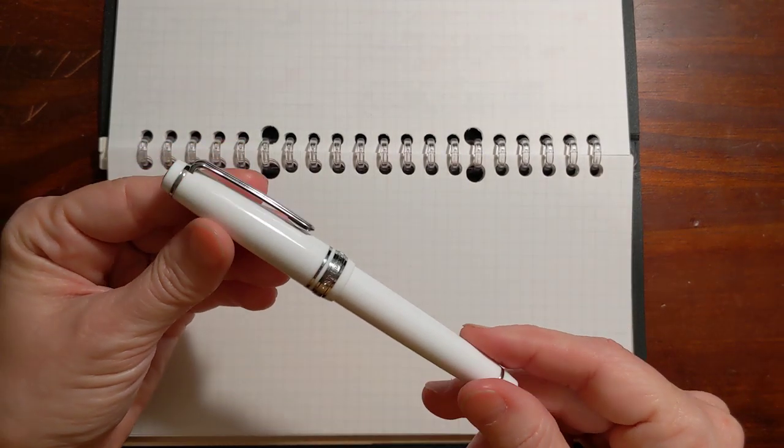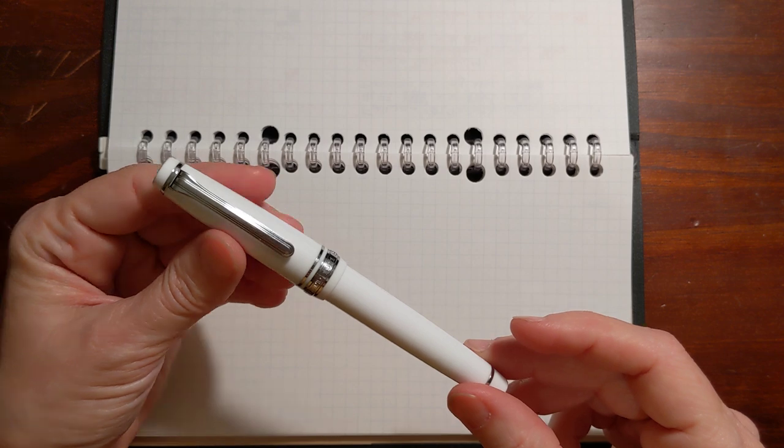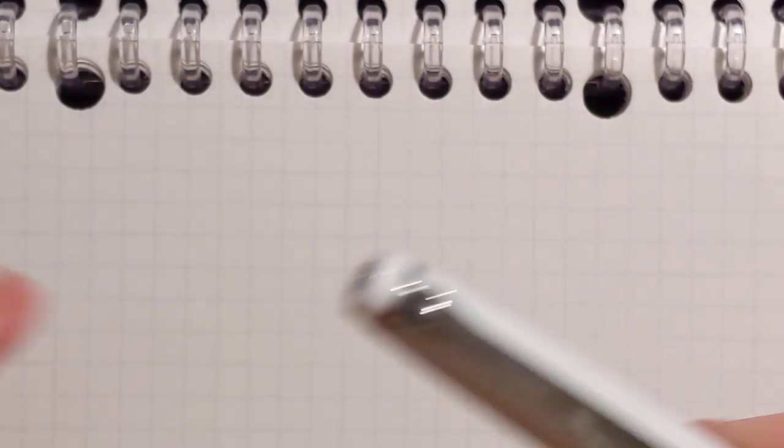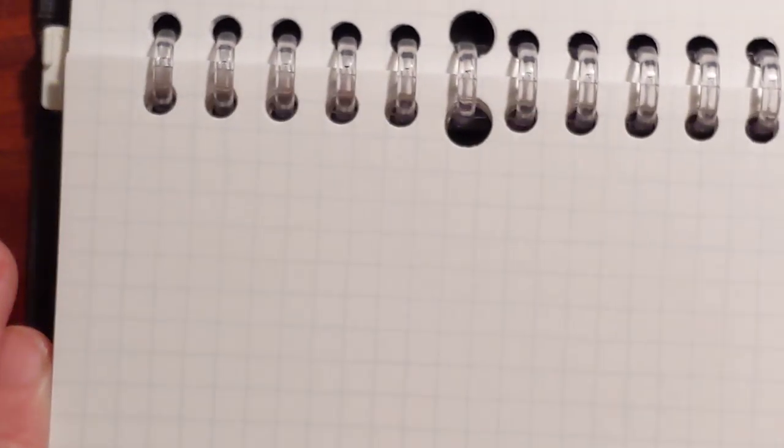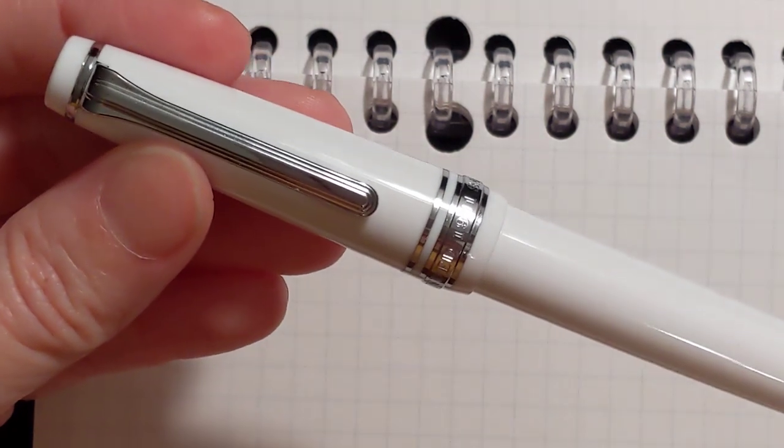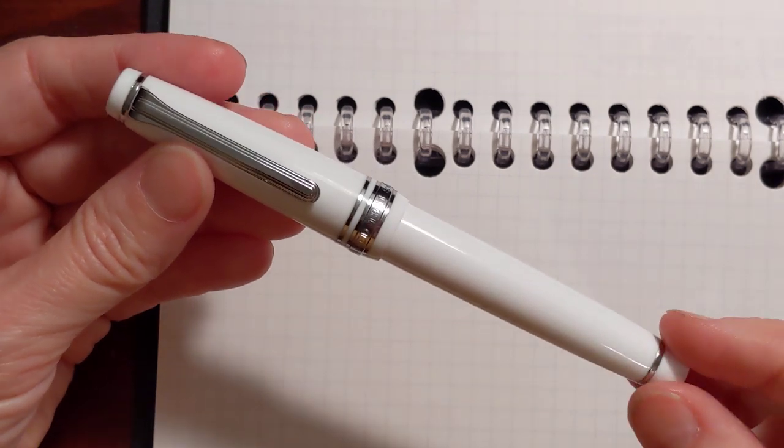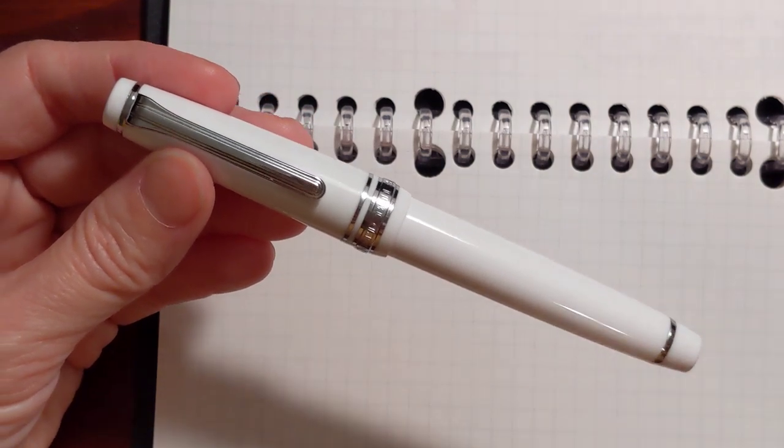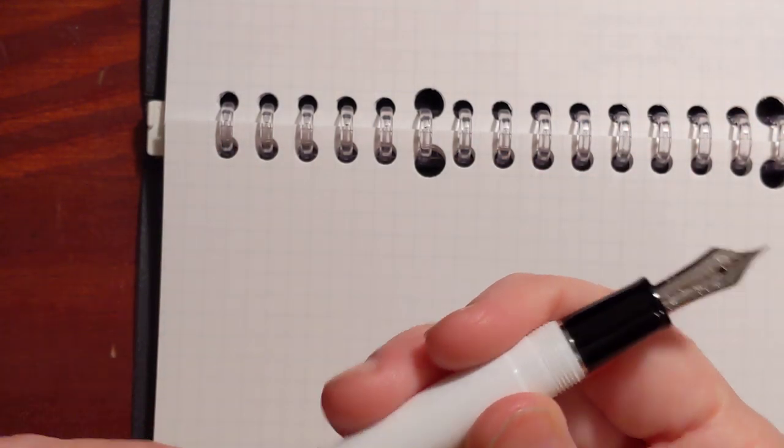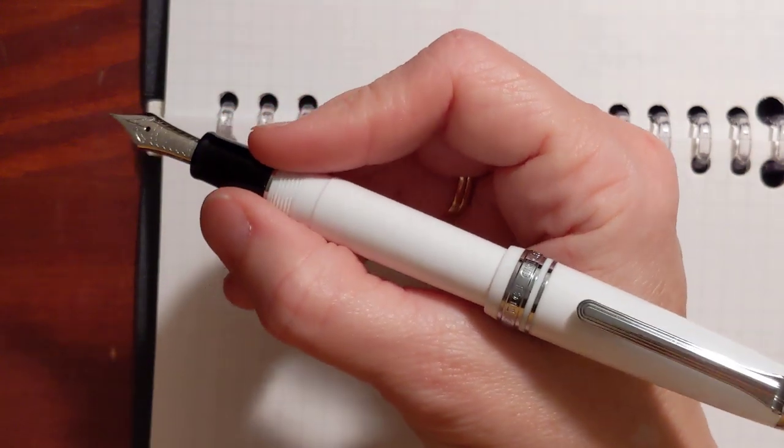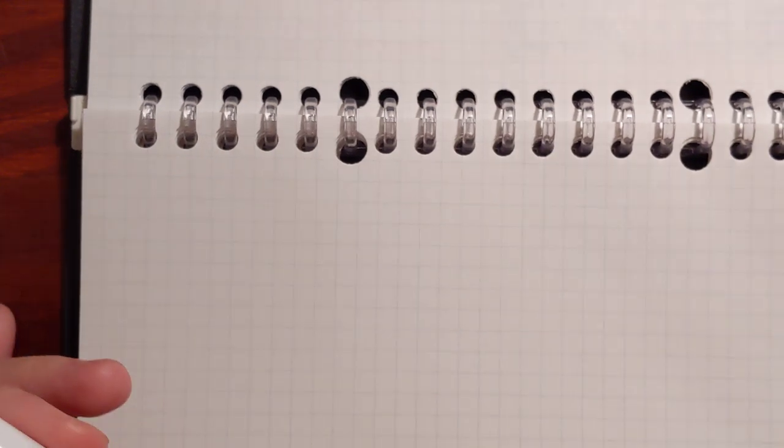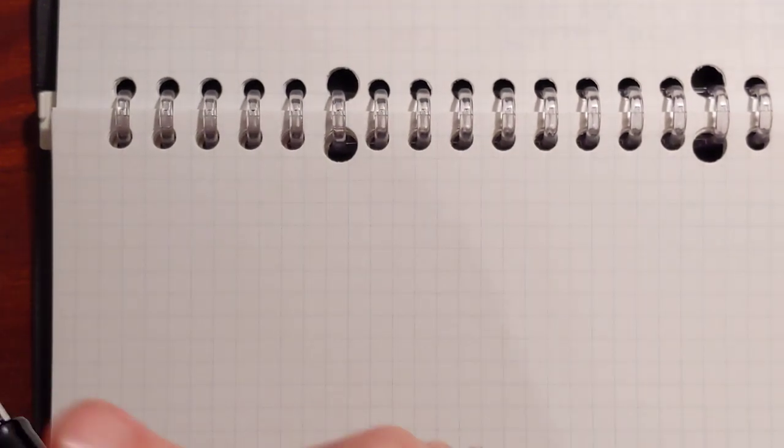Now the first pen on the list is the Sailor Pro Gear Slim. This was a grail pen for me for a long time. I like smaller pens and I like fine nibs. This is one of the smaller Sailor pens that when posted makes a very nice size pen. This has a 14 karat gold rhodium plated nib.